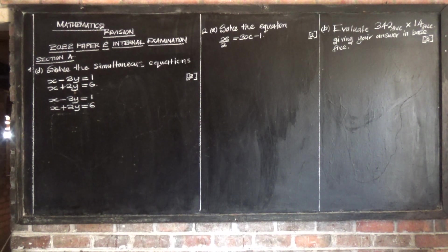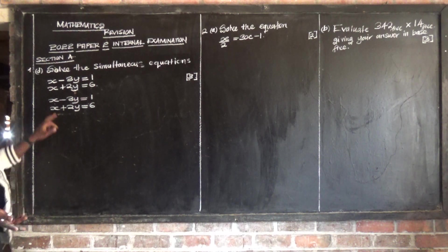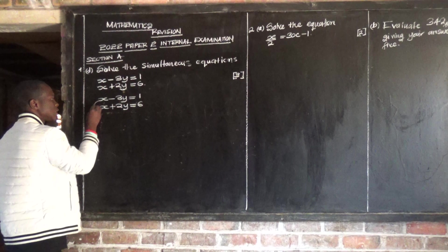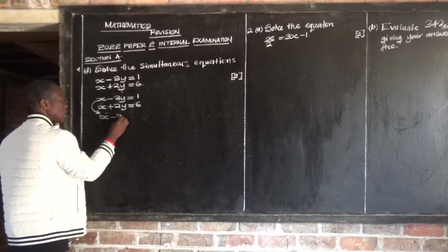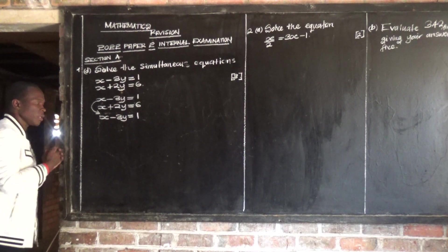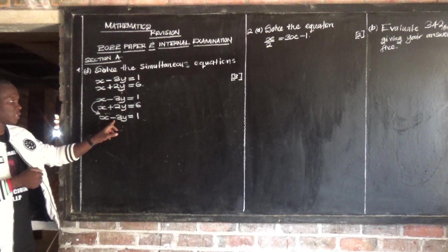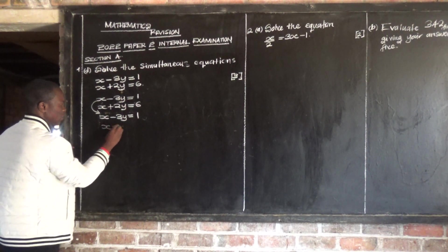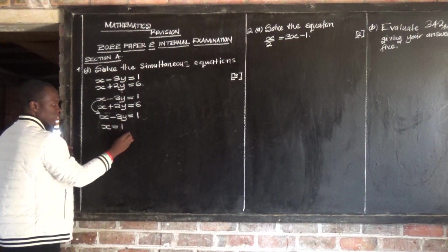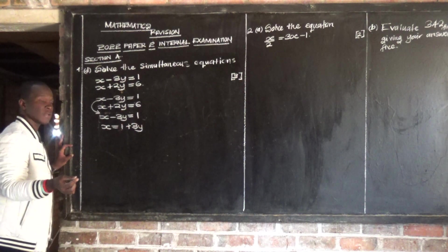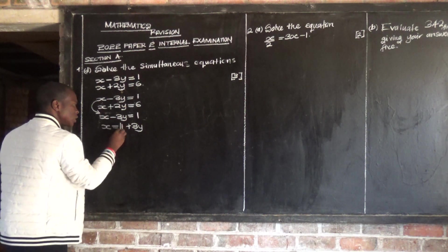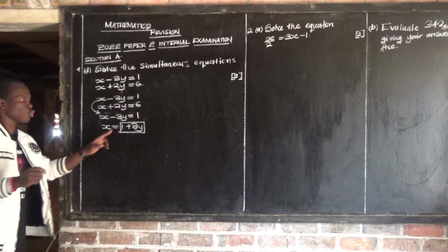For us to use the substitution method, step number one: we need to make one of the two variables the subject of the formula. In my case, I'm going to make x the subject of the formula in the first equation. The first equation is x minus 3y equals positive 1. So I transpose negative 3y to the other side, and I remain with x. So x is equal to 1 plus 3y.